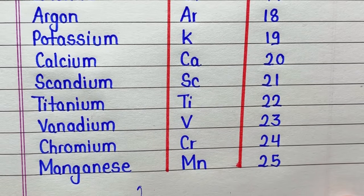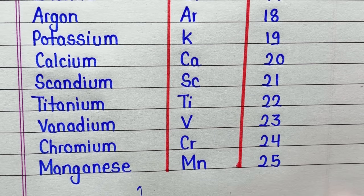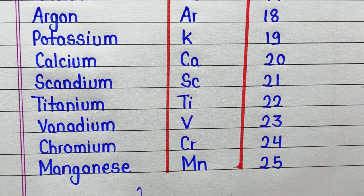Scandium, symbol is Sc, atomic number is 21. Titanium, symbol is Ti, atomic number is 22. Vanadium, symbol is V, atomic number is 23. Chromium, symbol is Cr, atomic number is 24.